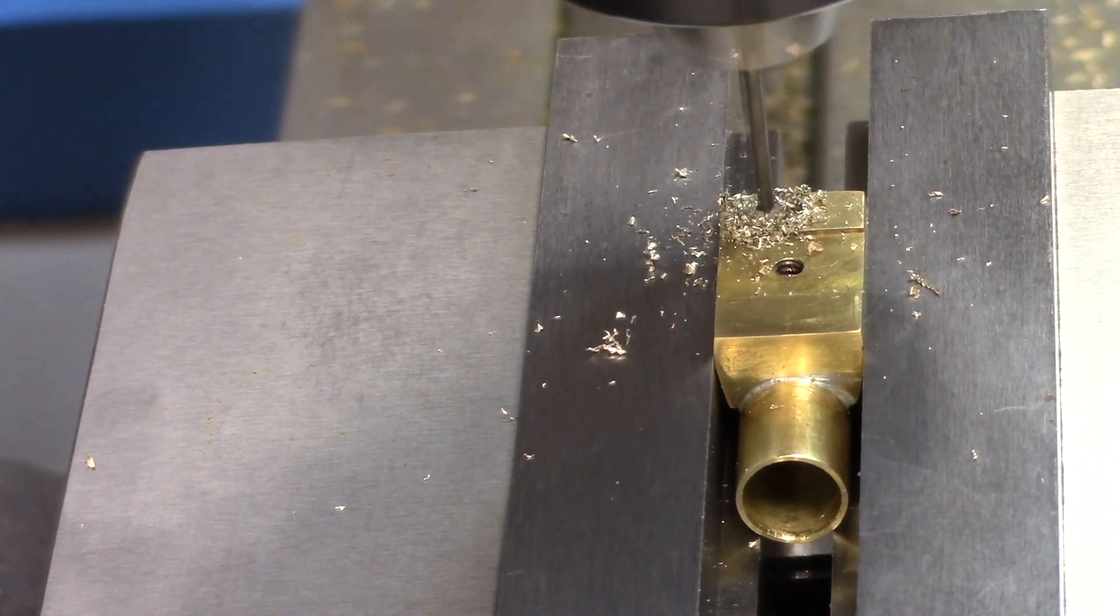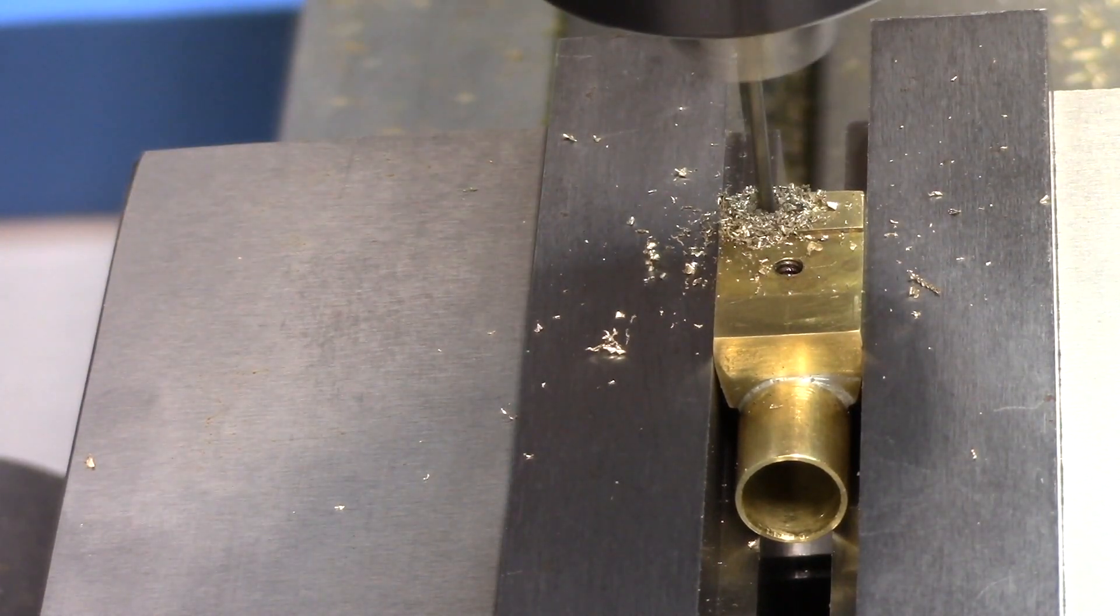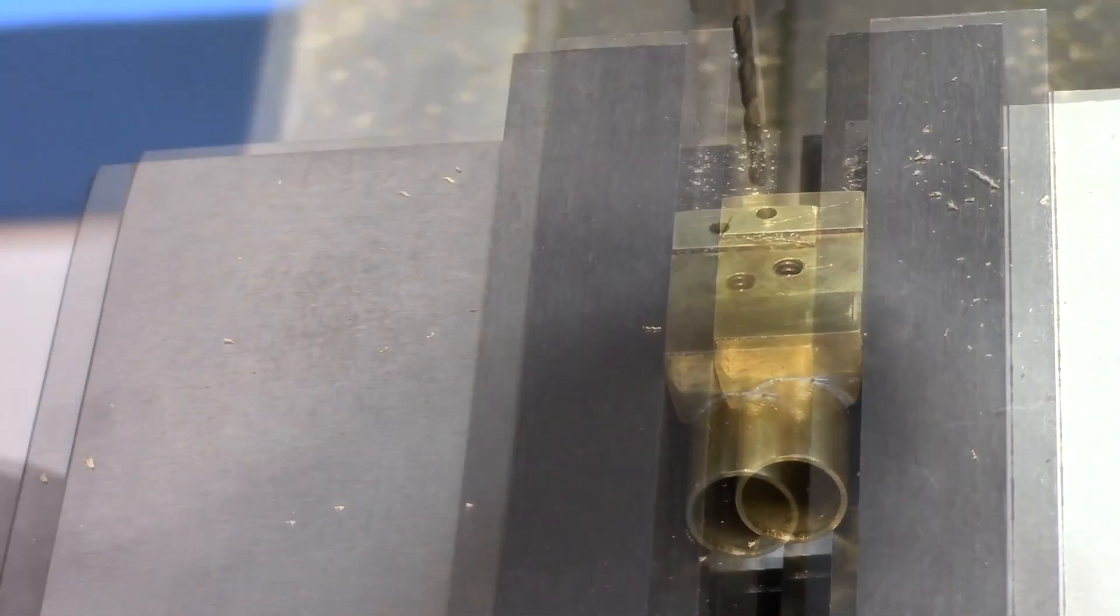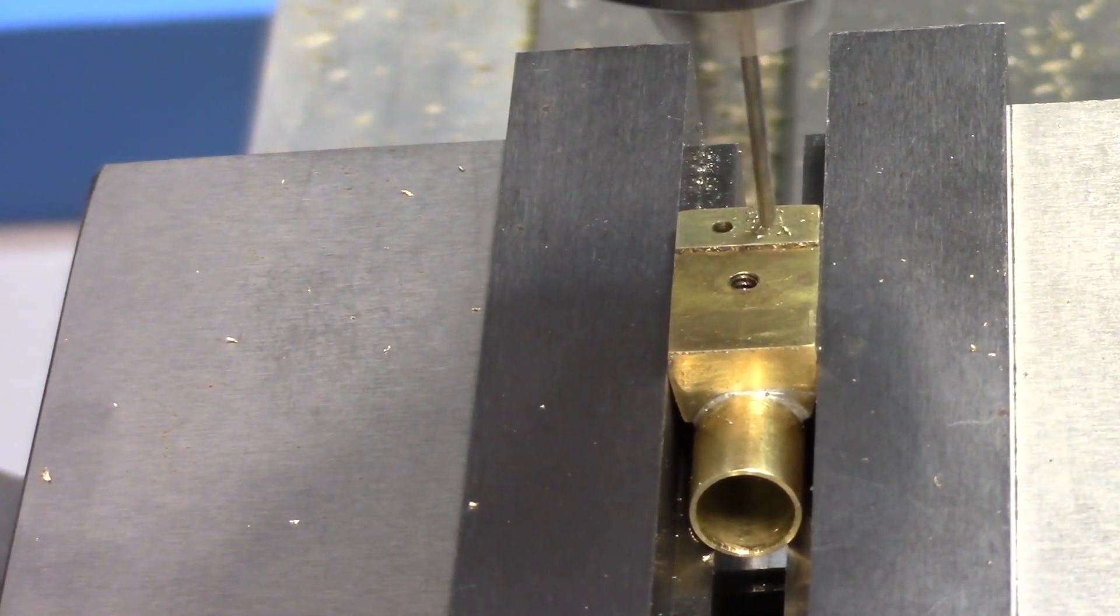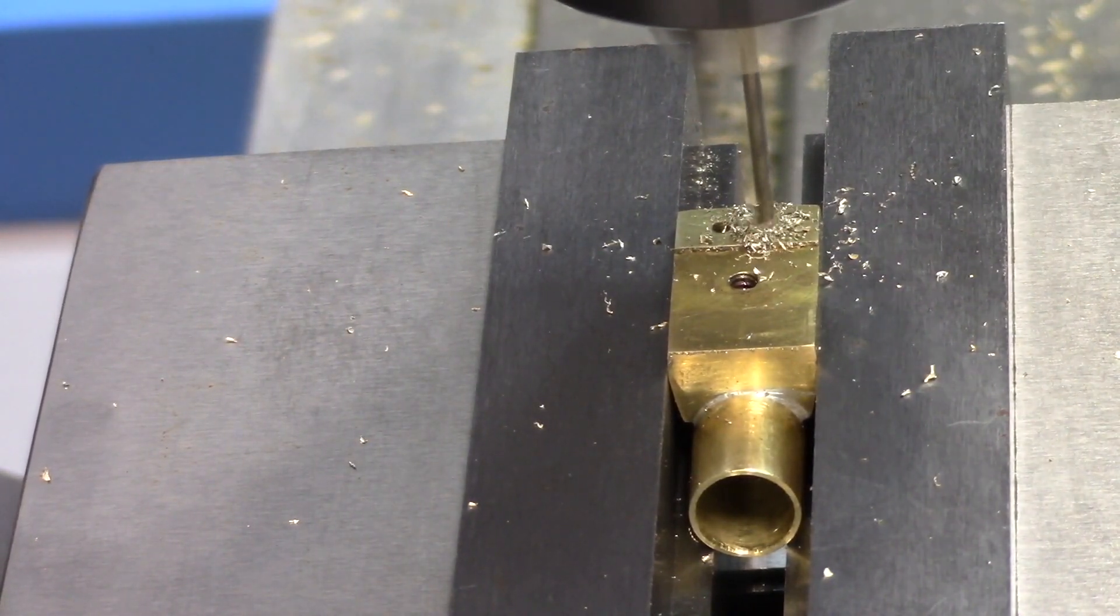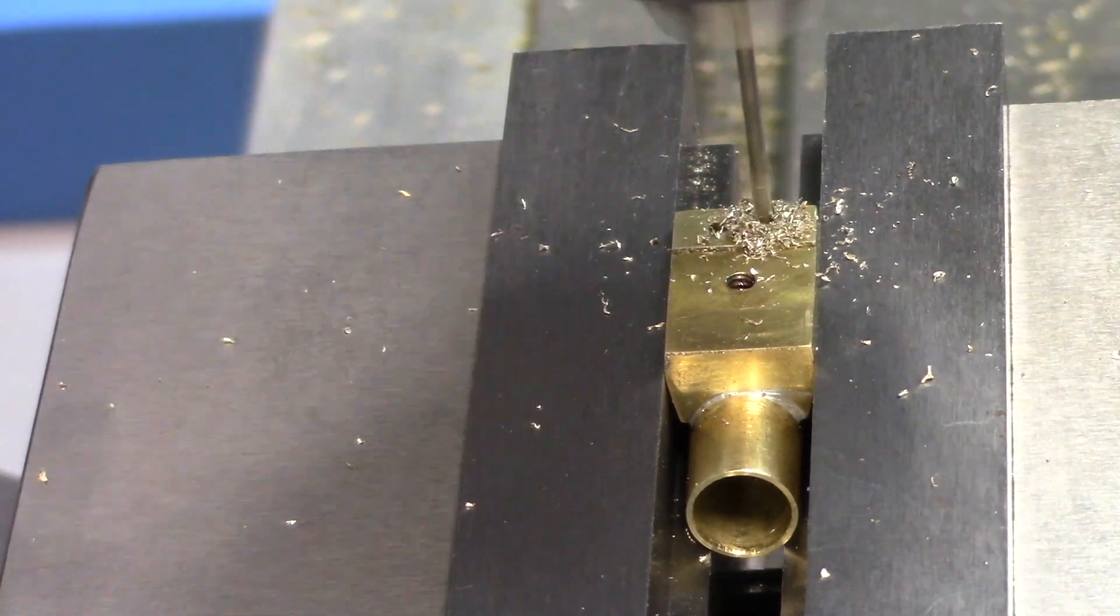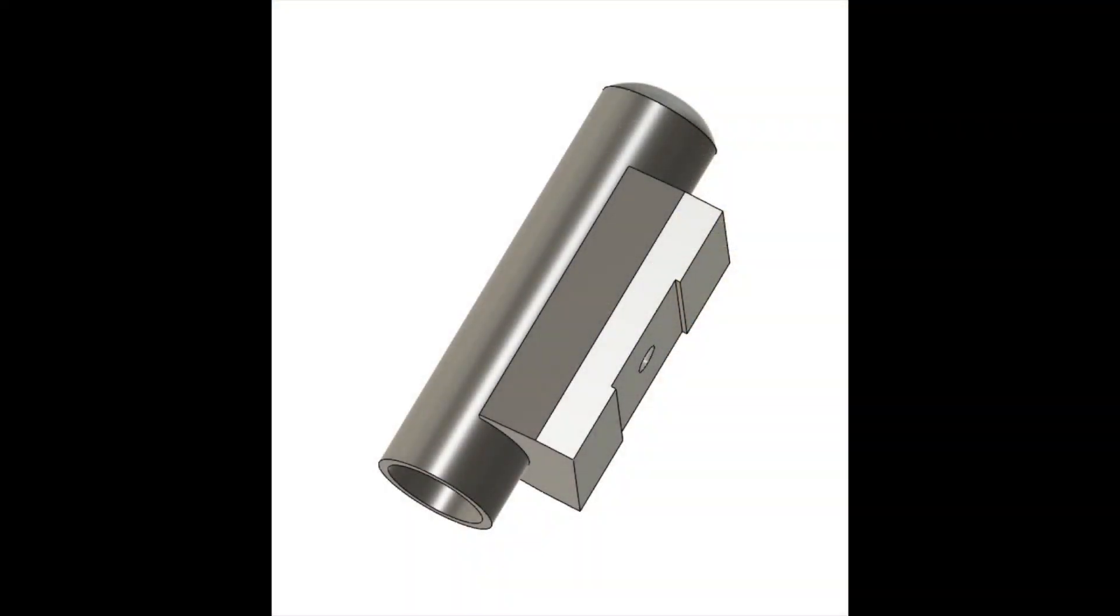Finally, the inlet and exhaust ports are drilled through the port block and into the cylinder. As the cylinder block rocks on its pivot, the steam inlet and exhaust ports are opened to allow steam in and out of the cylinder.